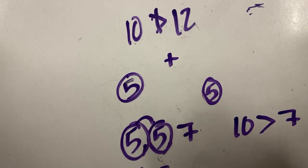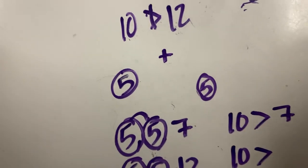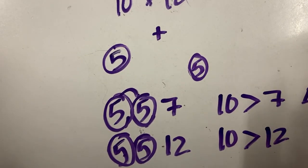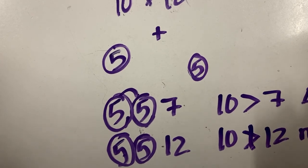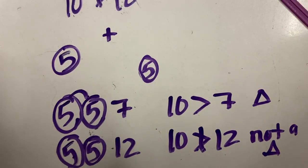But if we add 5, 5 and 12, we circle the two shorter sides, we add them together, and we compare it to the long side, and this is no, not a triangle. It would not create a triangle.